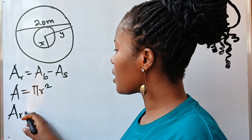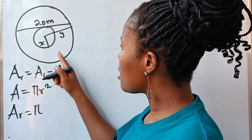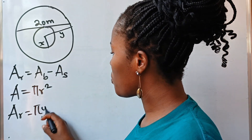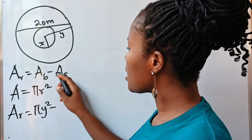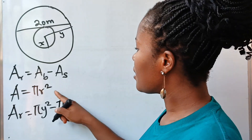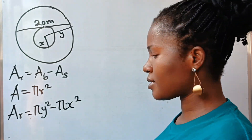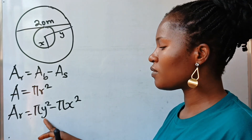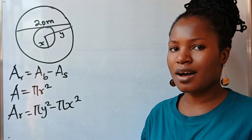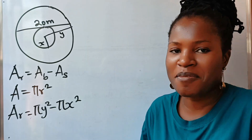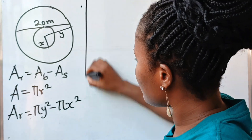Now let's go back to our formula. The area of the ring will be equal to: the area of the big circle is π y squared, minus the area of the small circle, which is π x squared. But the problem here is that we don't know the value of y and we don't know the value of x either. So where do we move from here? We'll figure it out.